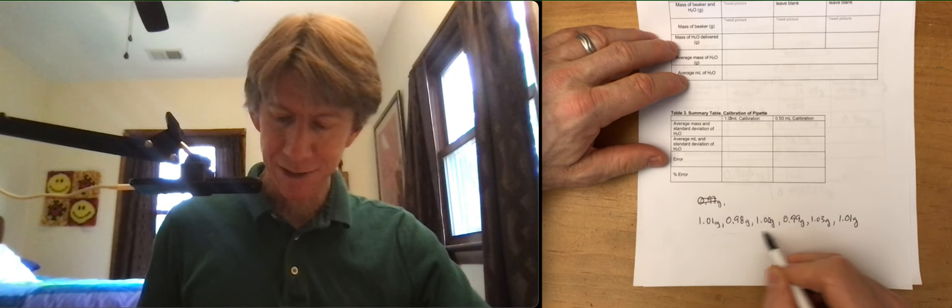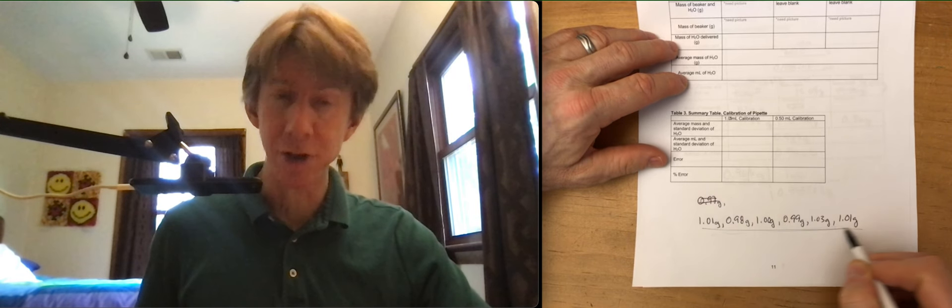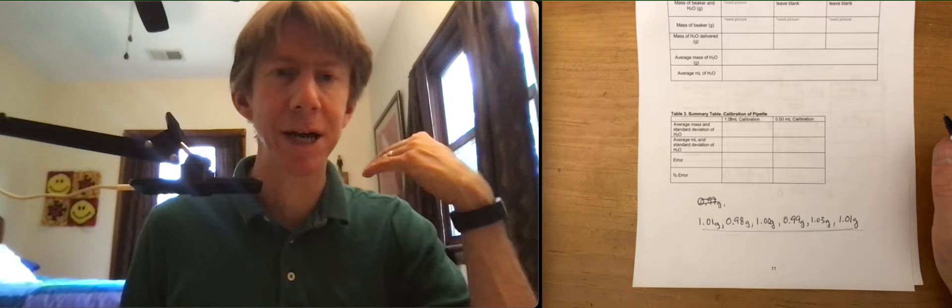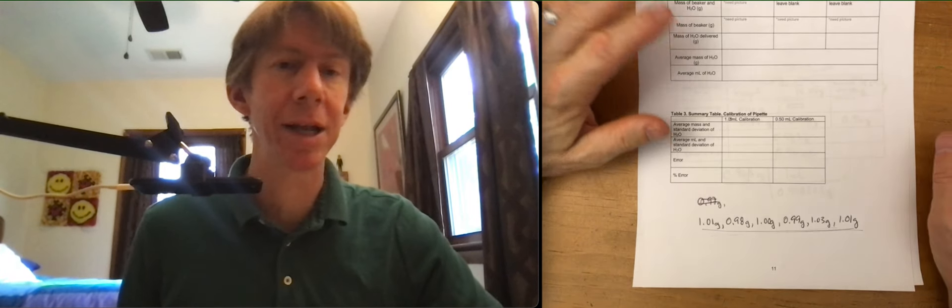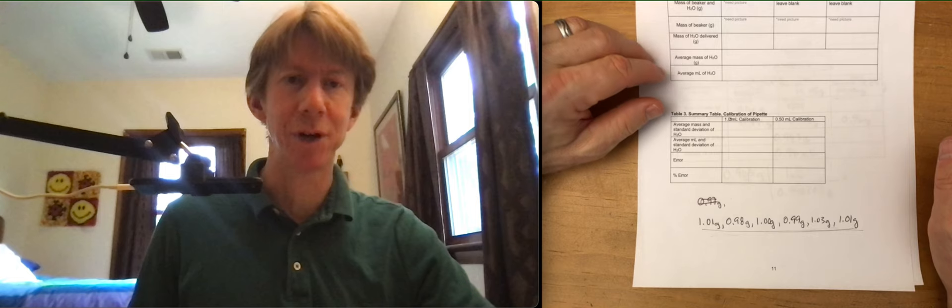I have my six values, my six good values. I'm ignoring my three values that led to the 0.96 that was too far off.